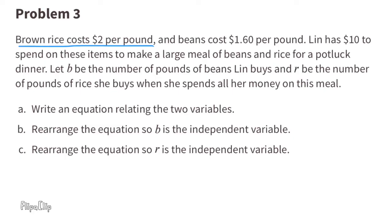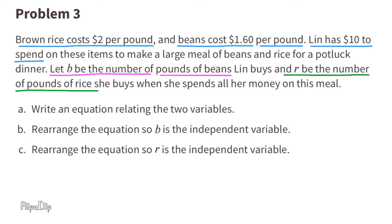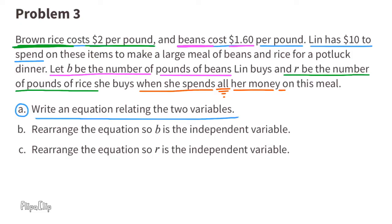Problem number 3. Brown rice costs $2 per pound and beans cost $1.60 per pound. Lynn has $10 to spend on these items to make a large meal of beans and rice for a potluck dinner. Let B be the number of pounds of beans Lynn buys and R be the number of pounds of rice she buys when she spends all her money. A. Write an equation relating the two variables. Rice at $2 per pound is 2R and beans at $1.60 per pound is 1.6B. So the equation is 2R plus 1.6B equals 10.